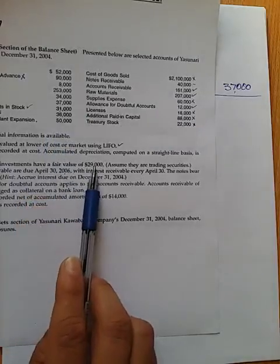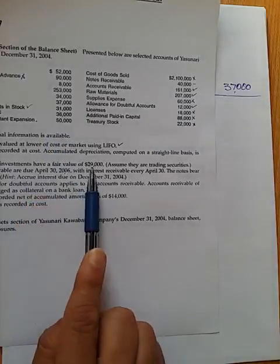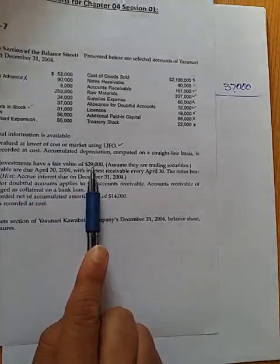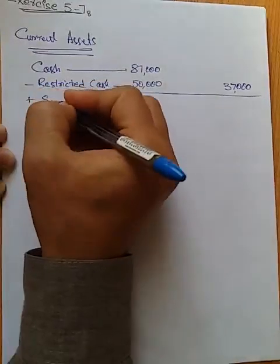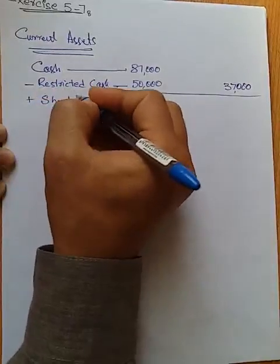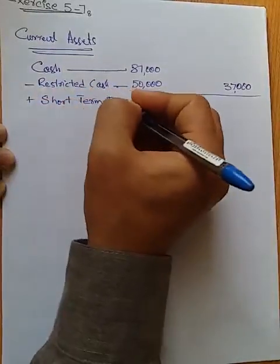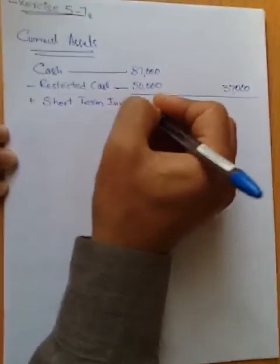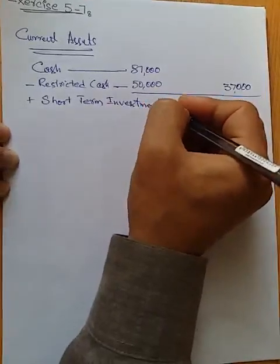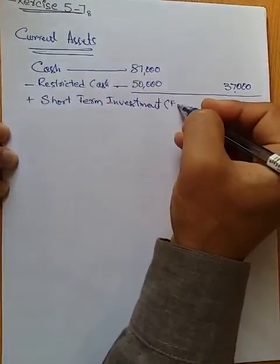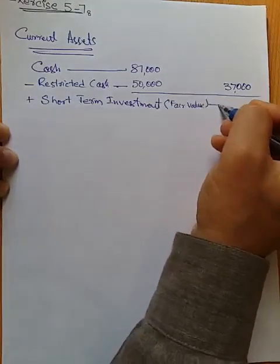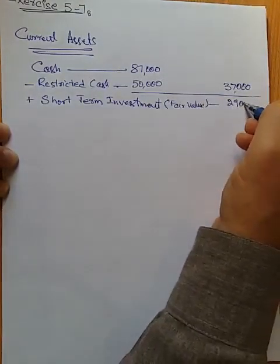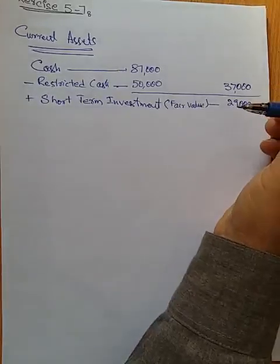The next item is short-term investments in stock, listed at $31,000. However, the short-term investment now has a fair value of $29,000. We are using the current market value — the fair value — which is $29,000.